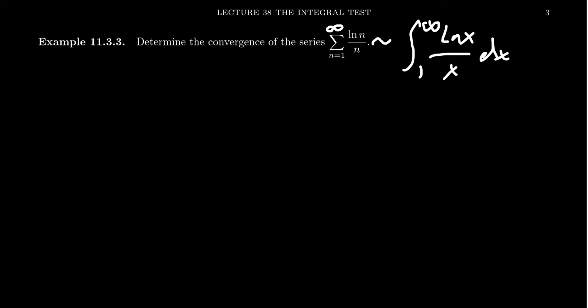This could be very helpful because we can try to integrate the right-hand side. But in order to use the integral test, we have to make sure our function — here it's the natural log of x over x — is positive, decreasing, and continuous.